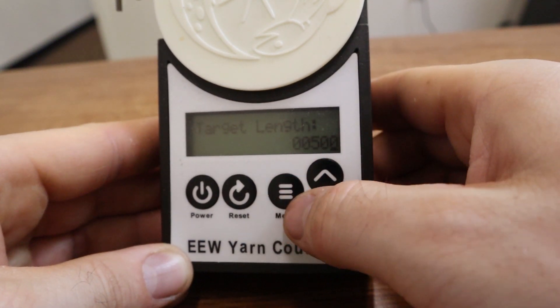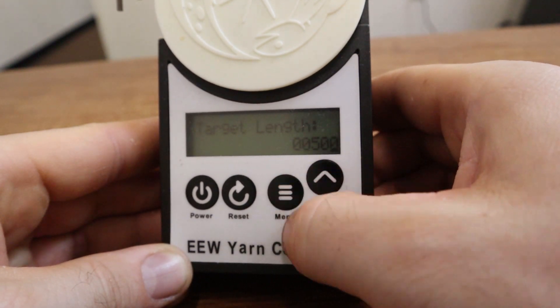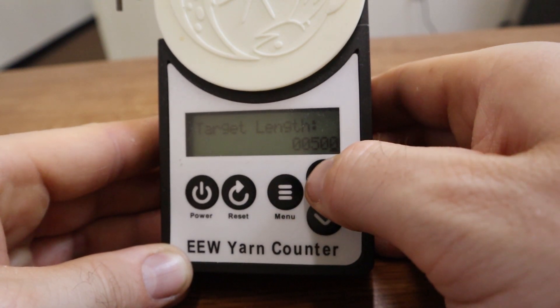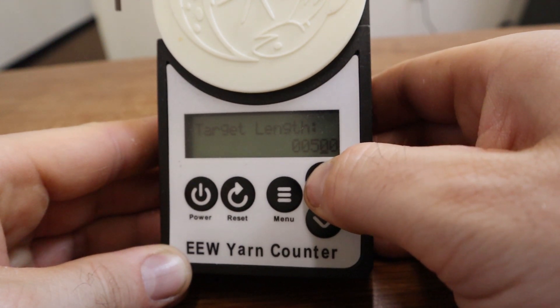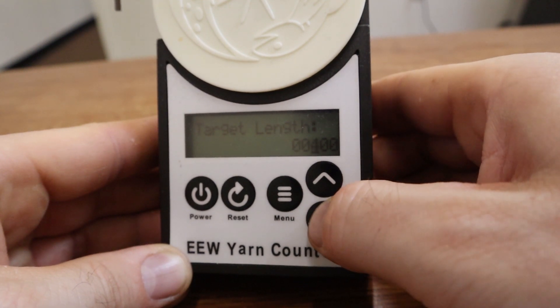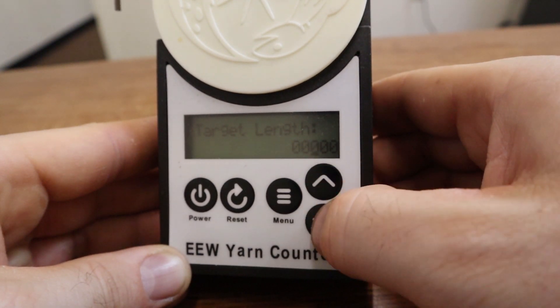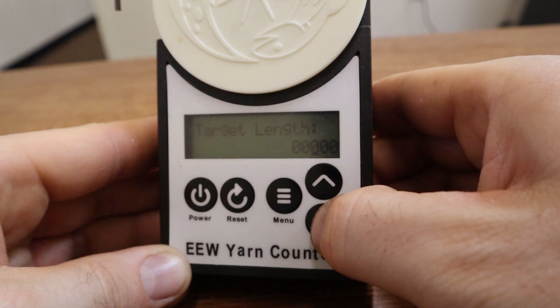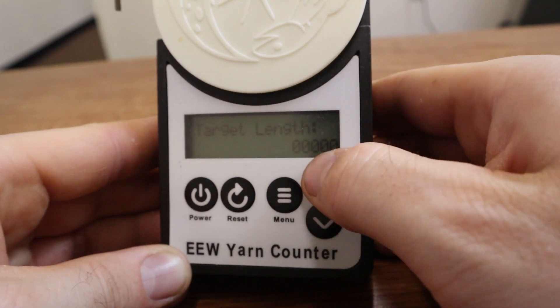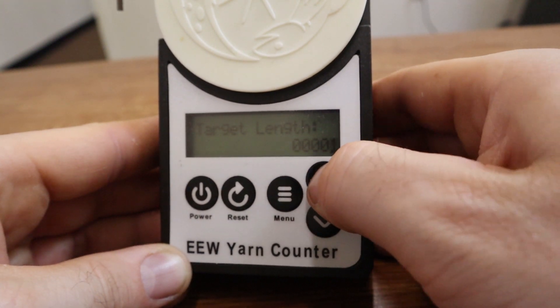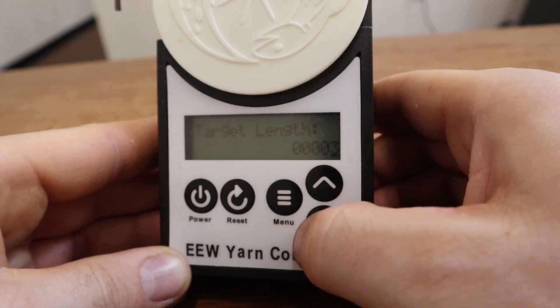And you hit menu again. And this is where you can adjust the target length. So if I hold the button here, it takes me to the next position. So let's do that twice, and we'll take this down to 0. And then we'll go back. So now it's at 0. If it's at 0 yards, it never beeps. So if you don't want it to ever beep, you can set it to 0, or just some really high value that you'll never get to.